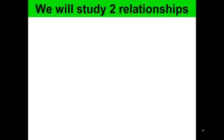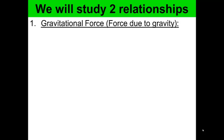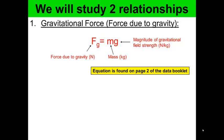We will study two types of relationships. The first is gravitational force. FG, the force due to gravity, is equal to mass times the gravitational field strength (mass times g). FG is measured in newtons, mass in kilograms, and g, the magnitude of the gravitational field strength, is measured in newtons per kilogram. This equation is found on page two of your data book.